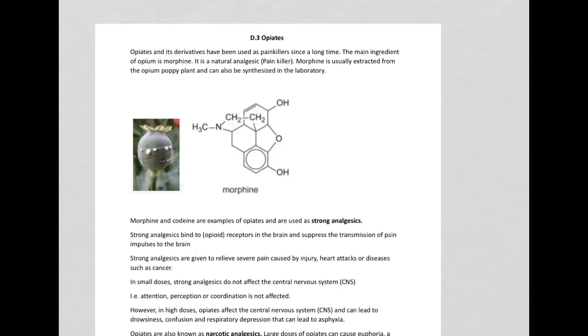Opiates are analgesics, so painkillers, and the main ingredient of opium is morphine. Morphine is naturally obtained from the opium poppy plant but can also be synthesized in the lab.